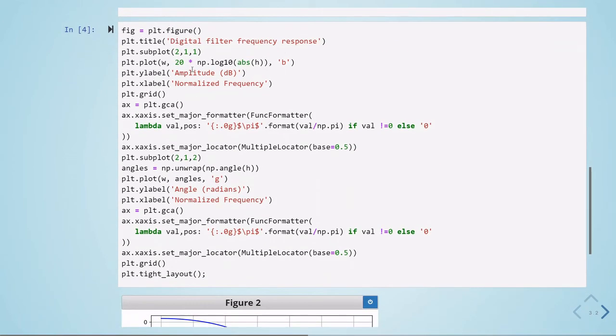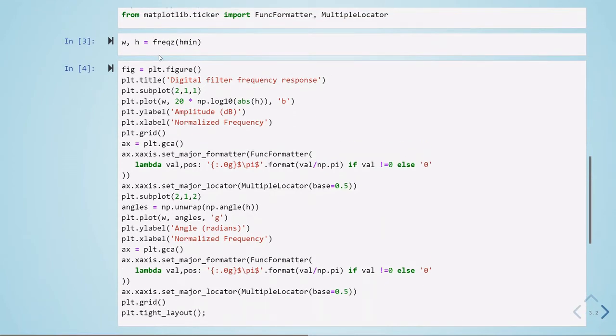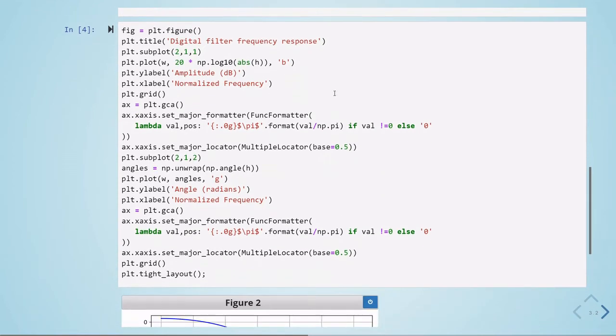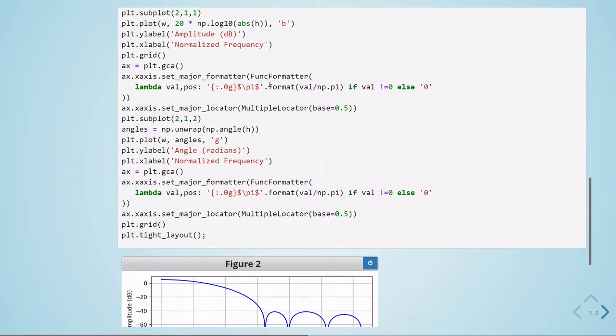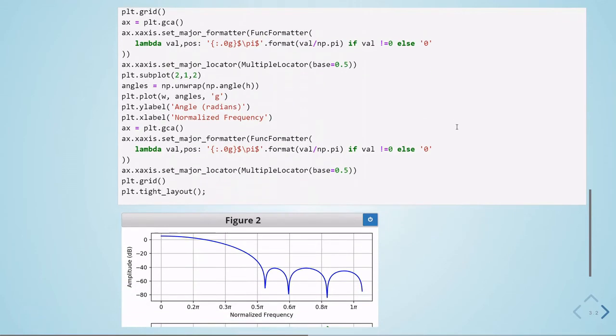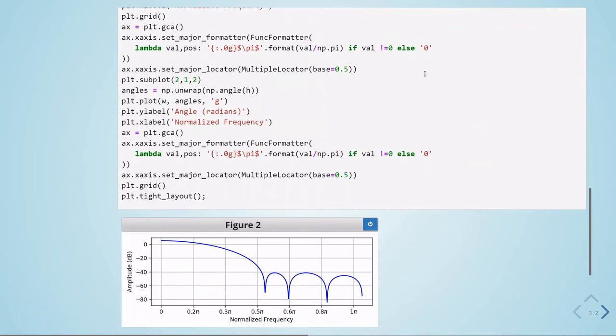And we are plotting the log, 20 log of the magnitude of the calculated frequency response. These are the frequencies. Here we are using this set major formatter to convert the numbers into multiples of pi.